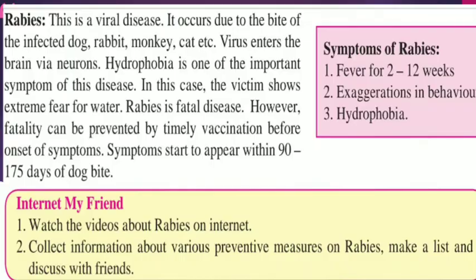Now let us see infections through animals. Rabies is a viral disease. It occurs due to the bite of an infected dog, rabbit, monkey, cat, etc. The virus enters the brain via neurons. Hydrophobia — extreme fear of water — is one of the important symptoms of this disease. Rabies is a fatal disease; however, fatality can be prevented by timely vaccination before the onset of symptoms.